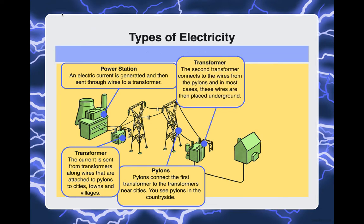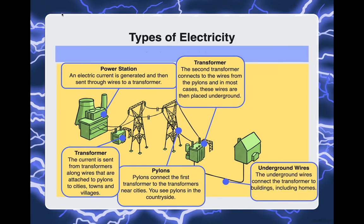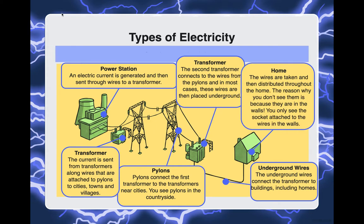The second transformer connects to the wires in the pylons, and in most cases these wires are then placed underground. These underground wires are connected to transformer buildings which include homes, and the wires are distributed throughout the home — the reason you don't see them is because they're in the walls. You will only see the socket attached to the wall. Make sure you do this drawing in your science notebook, as I will be looking for it. It does not have to be perfect, but you need to know how electricity goes from the power station into our homes.